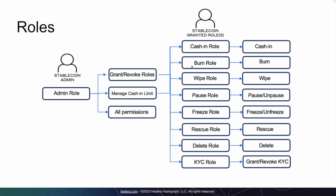The burn role allows the user to burn tokens from the treasury account. The wipe role allows the user to remove tokens from any particular account. The pause role allows the user to pause all transactions related to this stablecoin, which means that once the stablecoin is paused, no one can move their tokens.